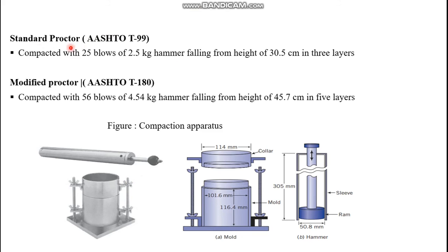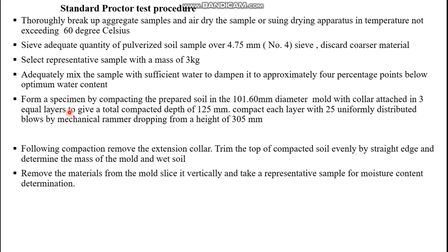Laboratory compaction is performed using either the Standard Proctor test or Modified Proctor test. In the Standard Proctor test, a soil specimen is compacted in three layers with a compaction effort of 2.5 kg and 25 uniformly distributed blows. In the Modified Proctor test, the sample is compacted in five consecutive layers with a compaction effort of 4.5 kg and 56 blows. The Modified Proctor test is typically used for aircraft pavements.